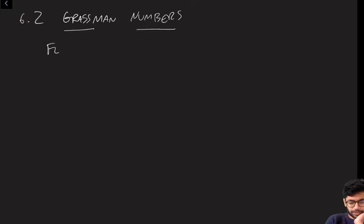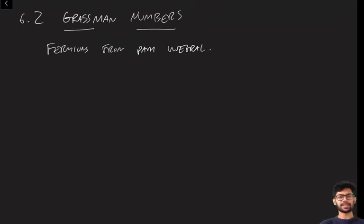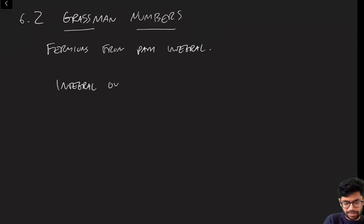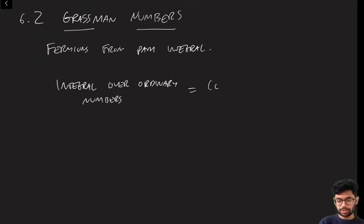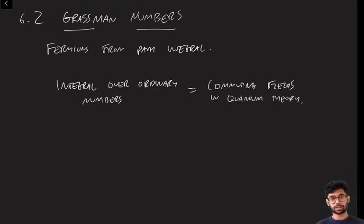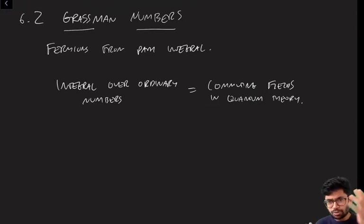We're now going to try to get fermions from the path integral. It should be clear that we're going to need to do something different. What we did in the first half of this course was show that if you do a path integral — an integral over ordinary numbers, specifically an integral over the field φ(x) with values at every spacetime point — that integral gives you a quantum theory with commuting fields, fields that obeyed canonical commutation relations and not anti-commutation relations.